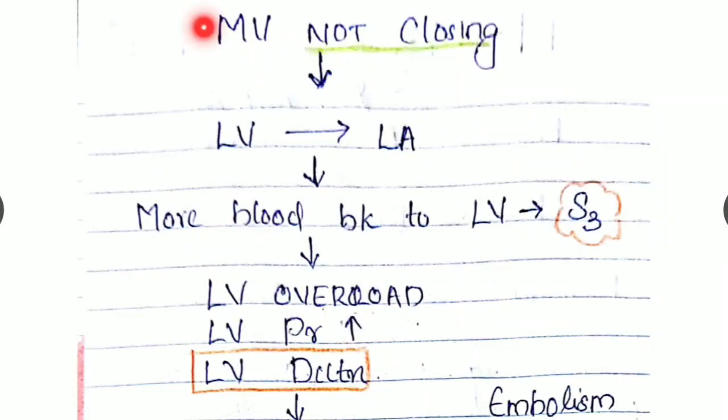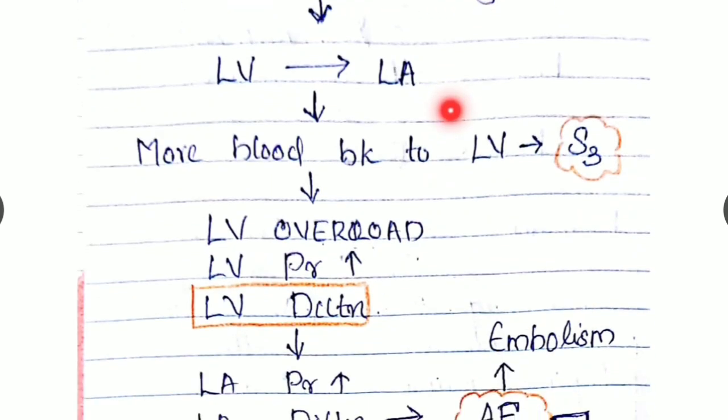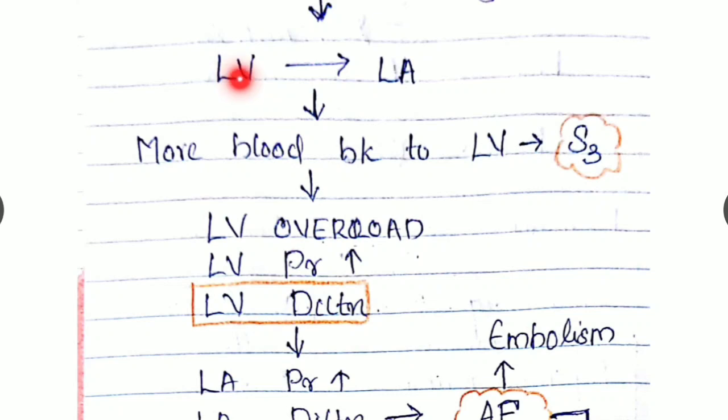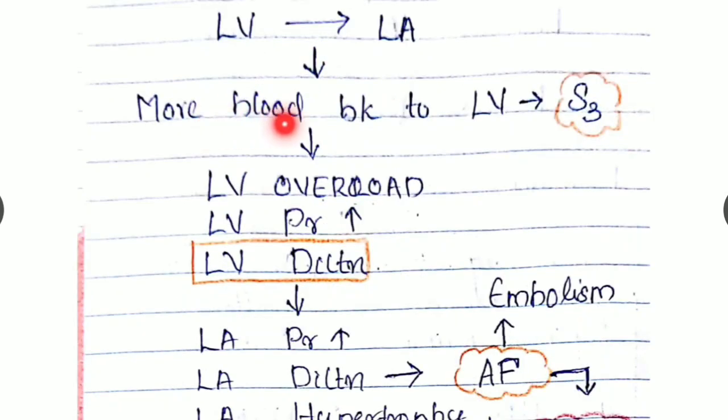Then about the pathophysiology. Here our mitral valve is not closing. So what happens is blood from the left ventricle is being pumped into the left atria. In each beat, more and more blood will be coming into the left ventricle. It causes left ventricle overload, left ventricle pressure rising, and left ventricle dilation.